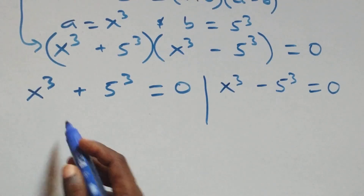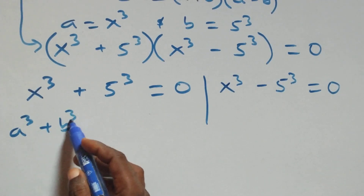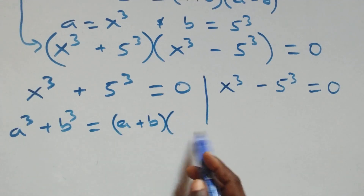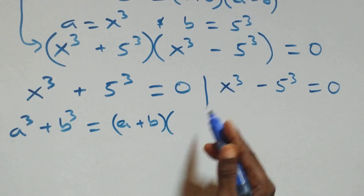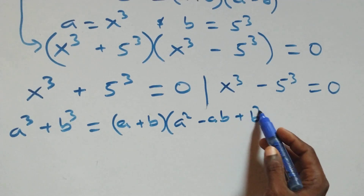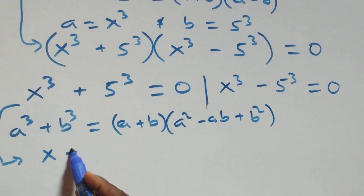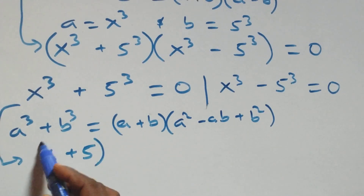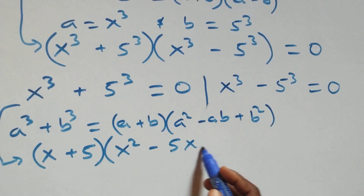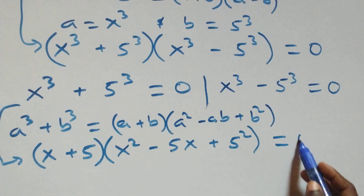Solving the first case, this follows the identity a³ plus b³ equals a plus b times a squared minus ab plus b squared. So x³ plus 5³ factors as x plus 5 times the bracket x squared minus 5x plus 5 squared equals to 0.